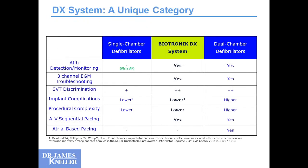In a 2011 paper, the Biotronik DX system was compared to single-chamber versus dual-chamber, and it was unique in that it had monitoring for AFib. The dual-chamber offered better troubleshooting, better SVT discrimination, lower implant complications, lower procedural complexity, and the possibility of AV sequential pacing. So if that person did need pacing, you can sense off the atrium and pace in the ventricle. This is truly a unique system and product that can fill a potential gap in the patients we treat.